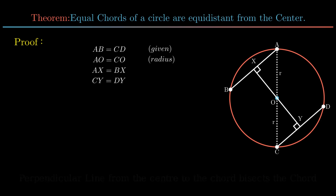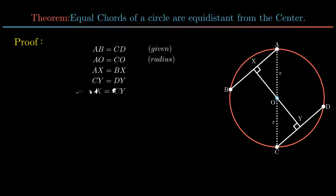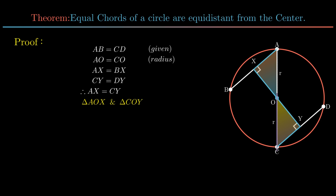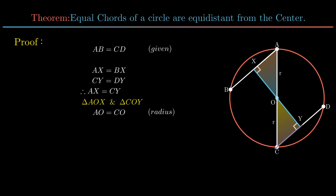Therefore AB can be expressed as twice AX, and CD as twice CY. As the chords are equal, we can conclude AX is equal to CY. Now in triangle AOX and triangle COY, side AO is equal to side CO as both are radii, and side AX is equal to side CY.